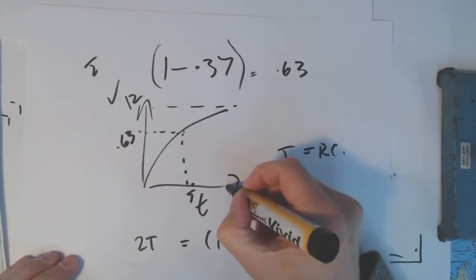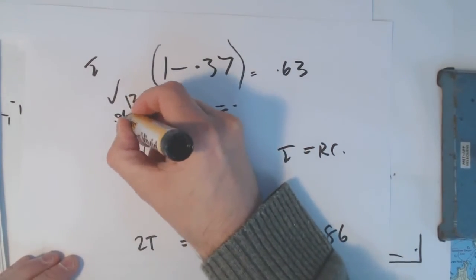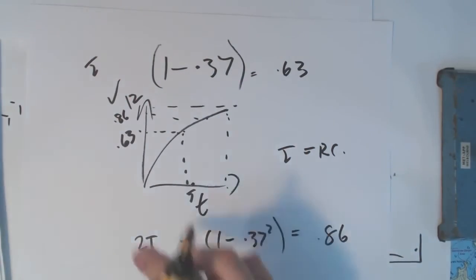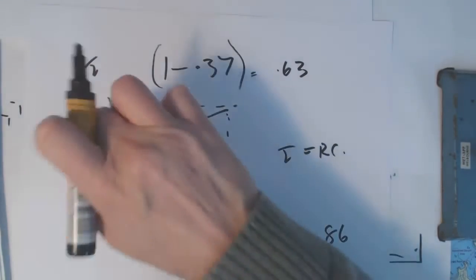So after two time constants, then that would be 0.86 of its final value. So this is 0.63 times 12. And this one is 0.86.